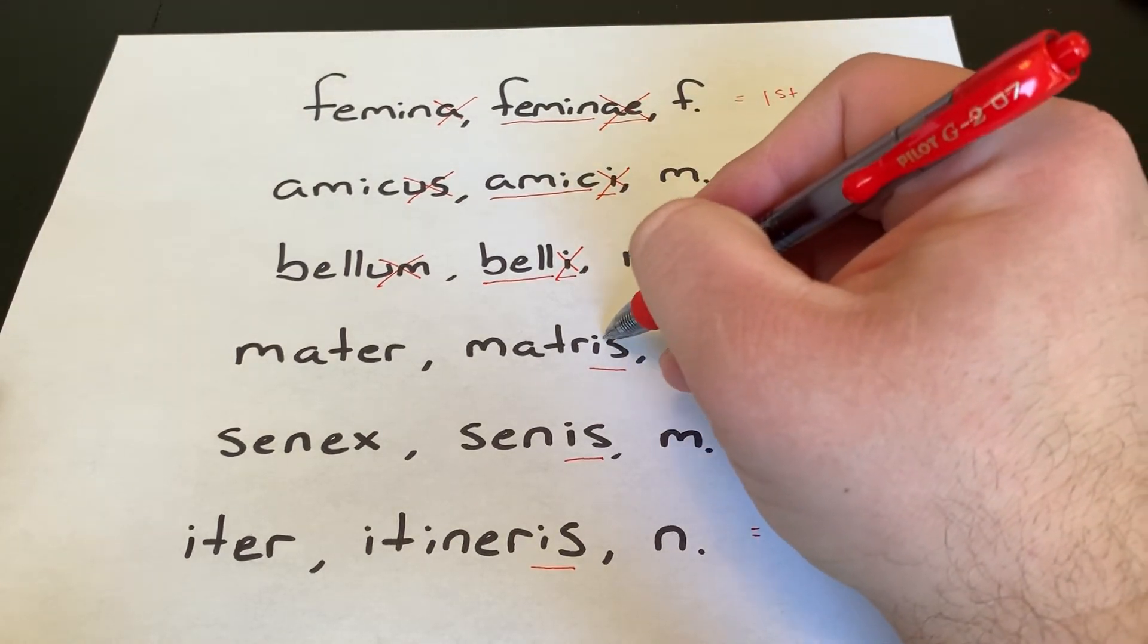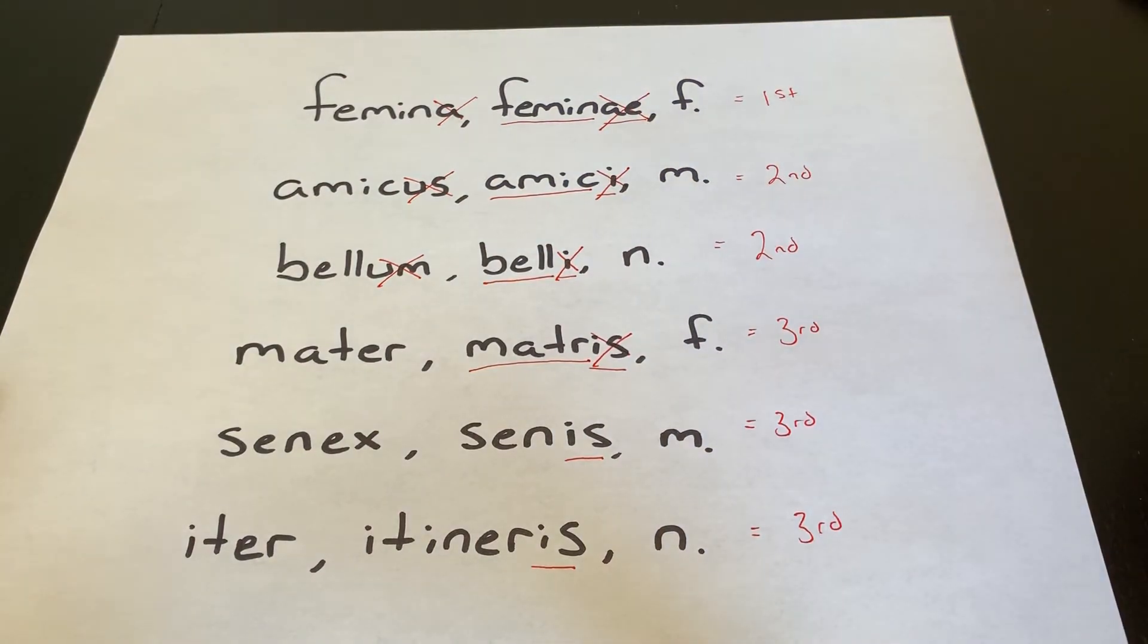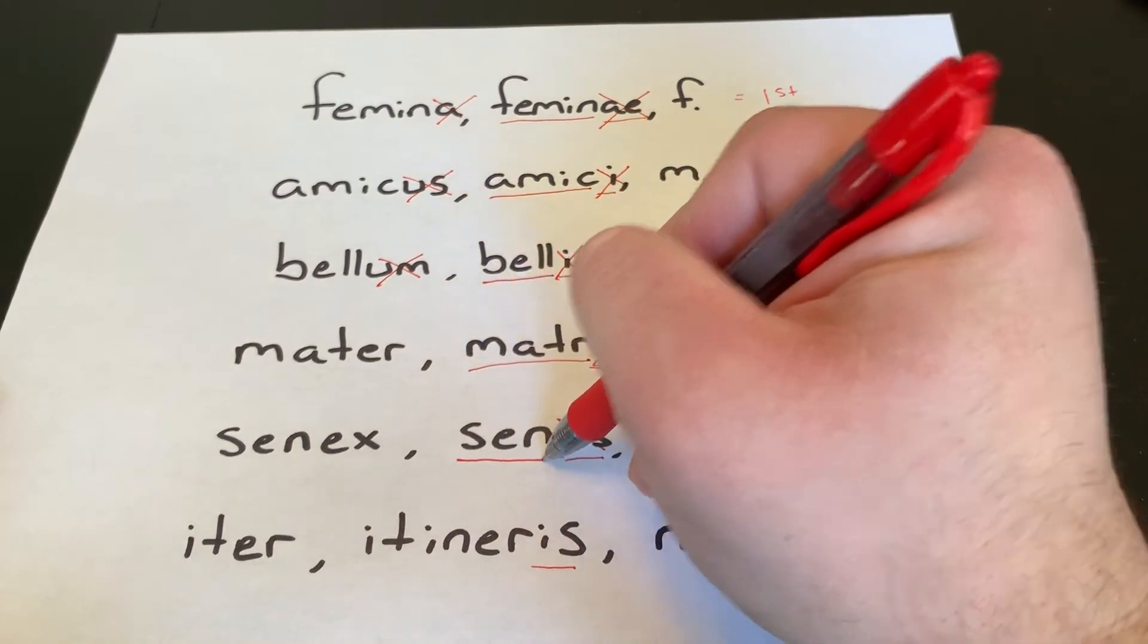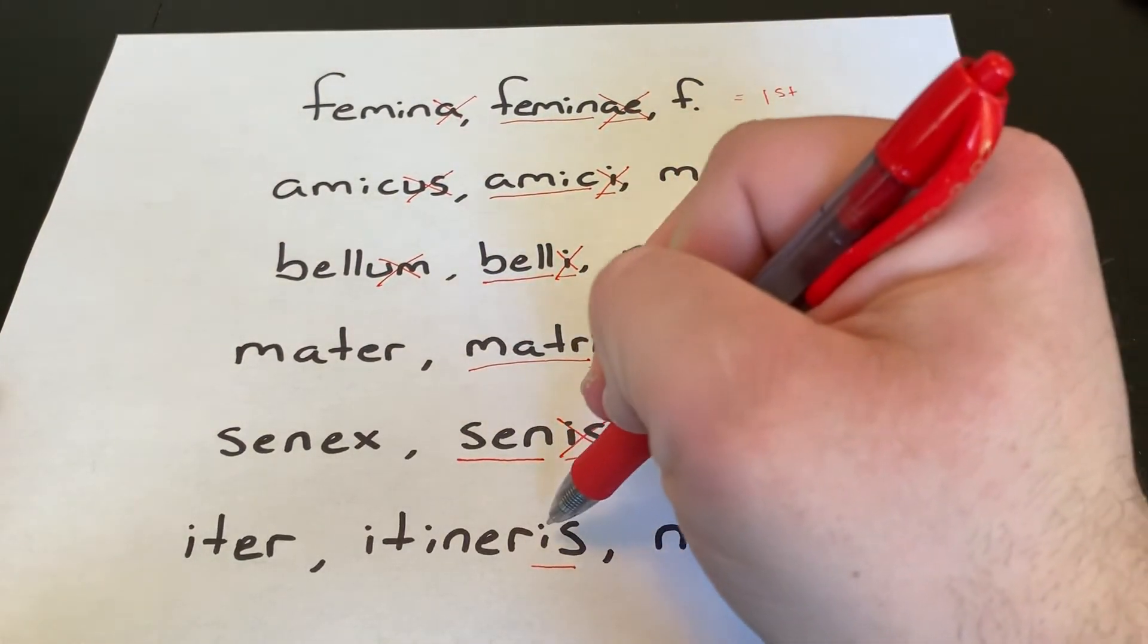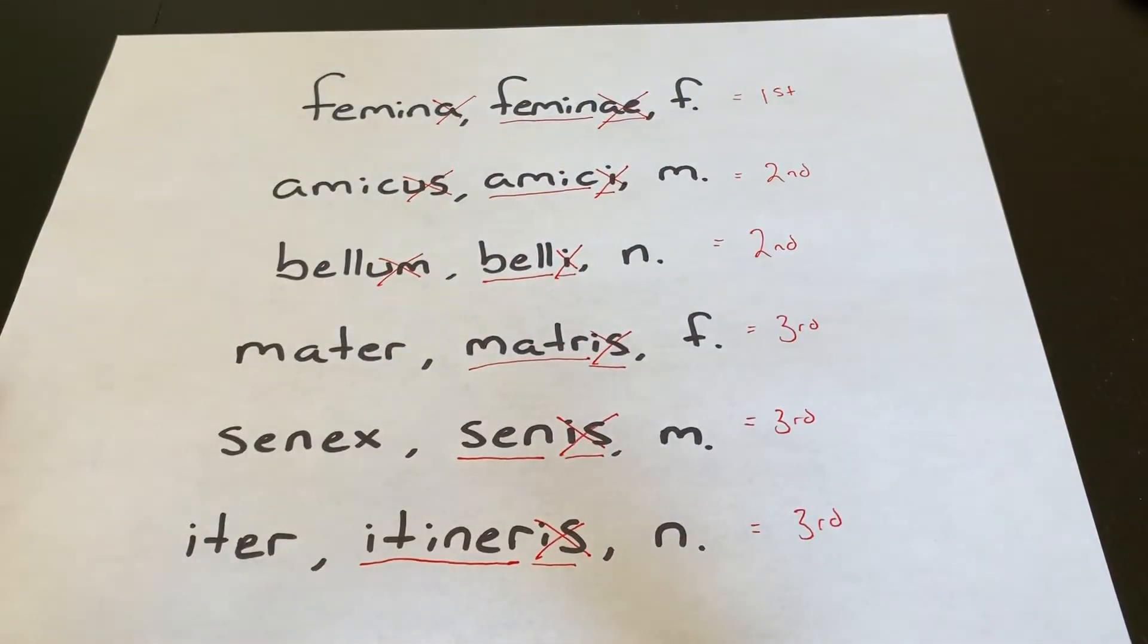So for the stem of mater, take off that IS. Matr is your stem. For senex, take off that IS. Sen is your stem. And for iter, take off that IS. And itiner is your stem.